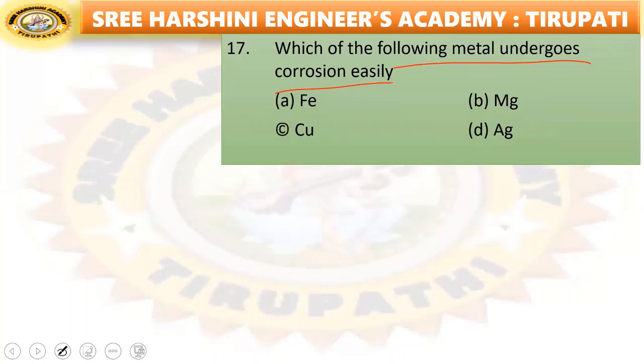Next: which of the following metals undergoes corrosion easily — iron (ferrous), magnesium, copper, or silver (Ag)? Option B — magnesium — is the right answer.